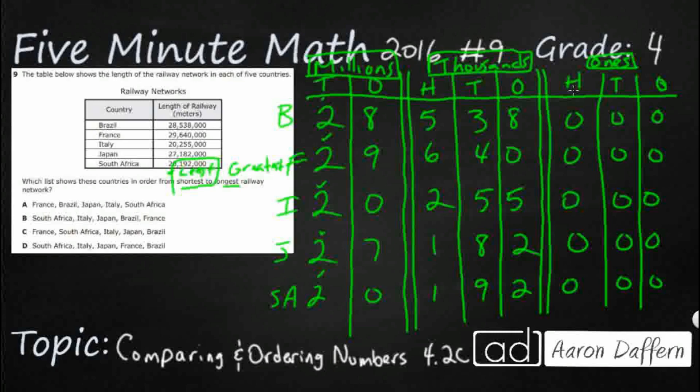Because look, right here I'm looking for my smallest numbers. I've got a 0 and a 0, those are my two smallest. So my smallest is either going to be Italy or South Africa, but in order to break this tie we need to go to the next spot to the right, to the hundred thousands. And look, I've got a 2 for Italy, but I've got a 1 here for South Africa. So my smallest, my least, is going to be South Africa because it's got a 0 in the millions and a 1 in the hundred thousands.